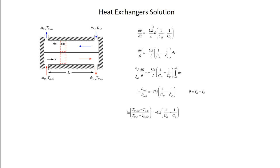This equation is separable: I bring theta to one side and DX to the other, then integrate both sides. On the left I integrate D-theta over theta; on the right I integrate in X. I assume UA is uniformly distributed with respect to X and that the two capacitance rates are constant — that is a limitation of these heat exchanger solutions. Integrating from X equals 0 to X equals L, theta at X equals 0 is TH-in minus TC-out (the temperature difference at the left side), and theta at X equals L is TH-out minus TC-in. That gives me my analytical solution.